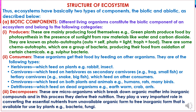Ecosystems have basically two types of components: biotic and abiotic. The biotic components consist of different living organisms belonging to the following categories. First are producers, which mainly produce food themselves. Green plants produce food by photosynthesis in the presence of sunlight from raw materials like water and carbon dioxide. They are known as photo-autotrophs. There are also chemotrophs, which are a group of bacteria producing their food from oxidation of certain chemicals, like sulfur bacteria.